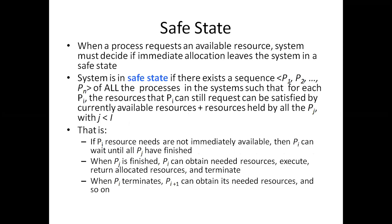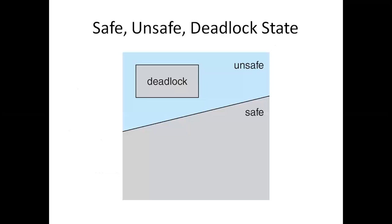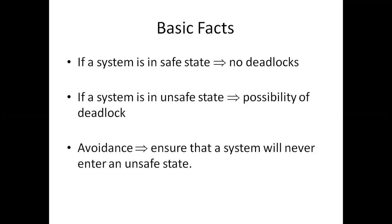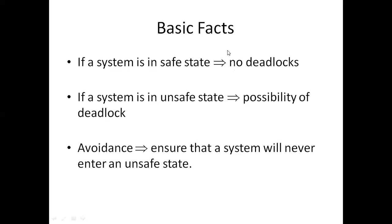The next topic is deadlock avoidance. Under deadlock avoidance we discuss safe state and unsafe state. If a system is in a safe state, there is no deadlock. If the system is in an unsafe state, there is a possibility of deadlock. Remember — we cannot say compulsorily that there will be a deadlock in an unsafe state. Safe state means definitely no deadlock; unsafe state means possibility of deadlock. This is an important point for exams and interviews.